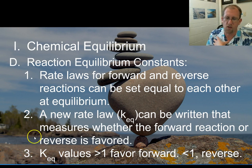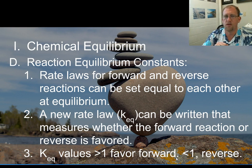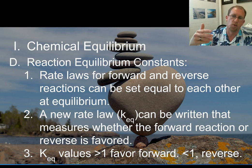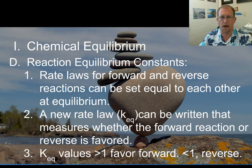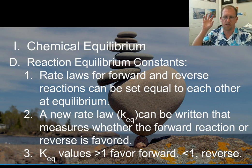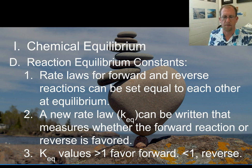If you get a Keq value that is greater than one, then it favors the forward reaction, and so the reaction has gone forward almost all the way and then found this point of balance. If it's less than one, then it favors the reverse reaction — the reaction gets started and then hits equilibrium pretty quickly. So it's favoring the reverse reaction.